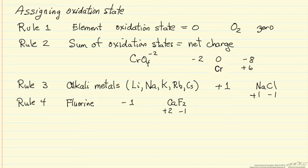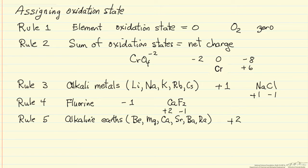The next rule says that the alkaline earths — the elements in the second column of the periodic table — have an oxidation state of plus 2. For example, in magnesium oxide, magnesium is plus 2 and oxygen would be minus 2.